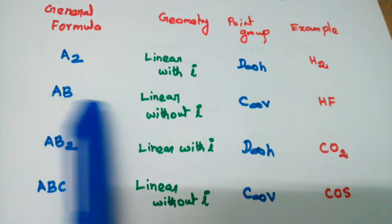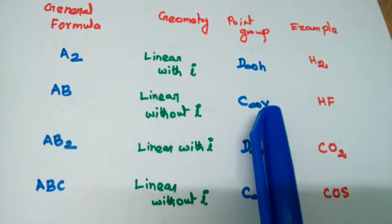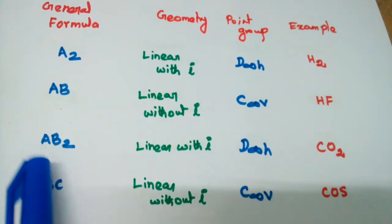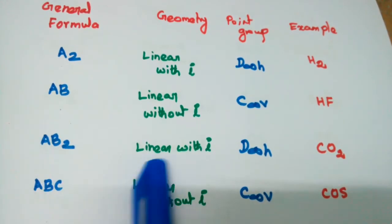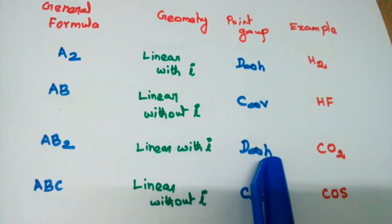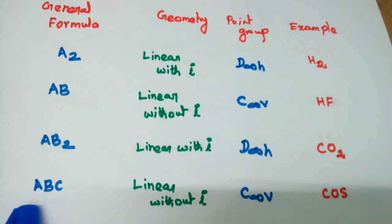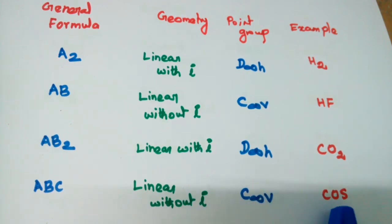AB linear without identity, point group C∞v, example HF. General formula AB2, geometry linear with identity, point group D∞h, example CO2. General formula ABC, geometry linear without identity, point group C∞v, example COS.